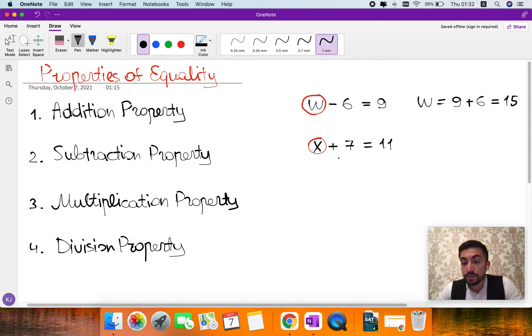Say X plus 7 equals 11. Again, we need to find the value of the variable X. To do this, we need to move positive 7 to the right side of the equation. Since it's got a positive sign, when we move it to the right, the sign will change to negative.